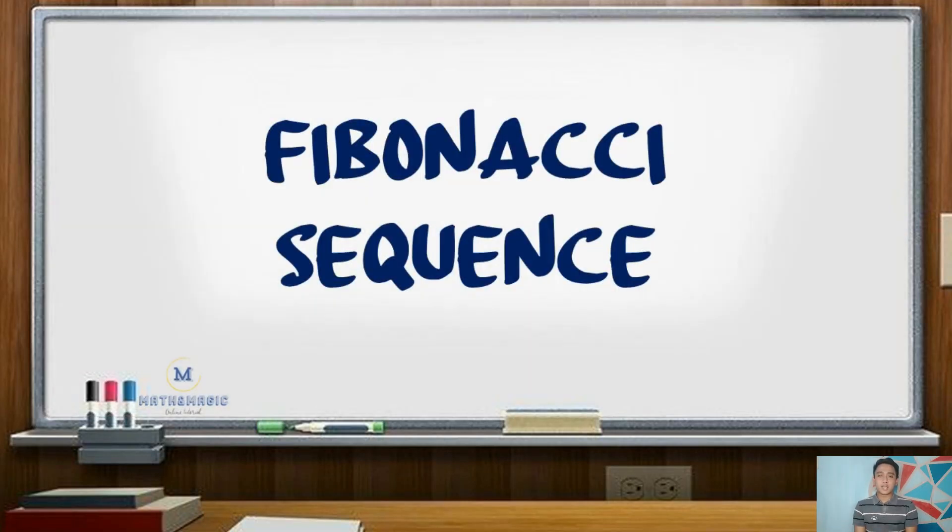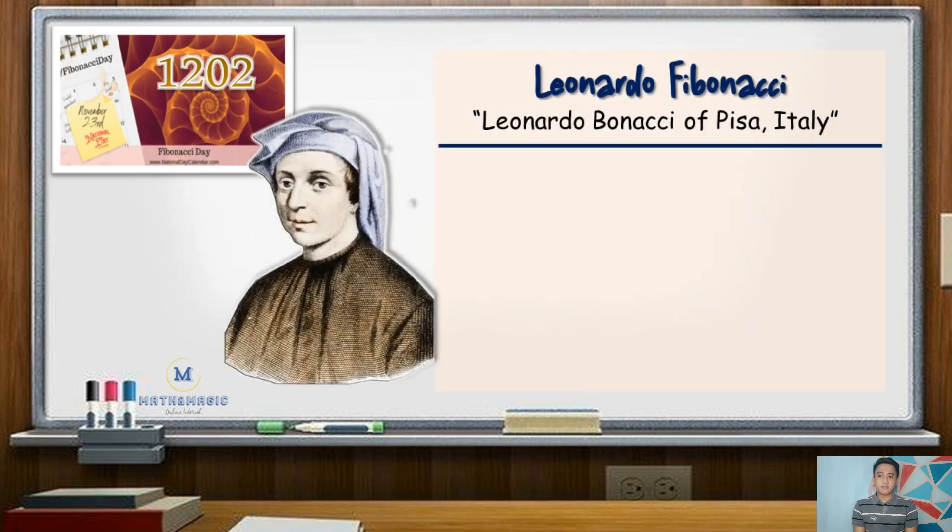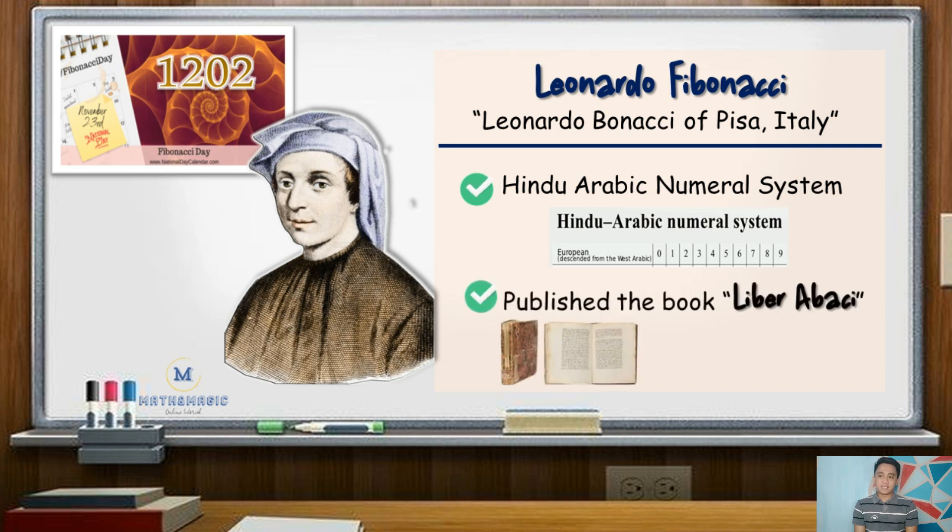In the year 1202, Leonardo Fibonacci, also known as Leonardo Bonacci of Pisa, an Italian mathematician of the Middle Ages, spread the Hindu-Arabic numeral system in Europe. One of his famous works is the book Liber Abaci, which means Book of Calculations.